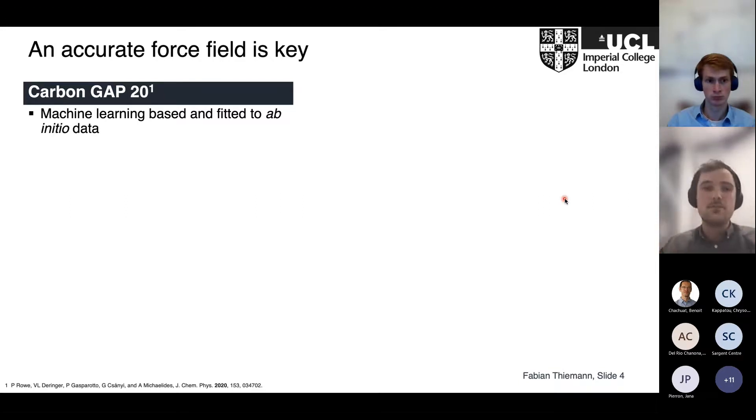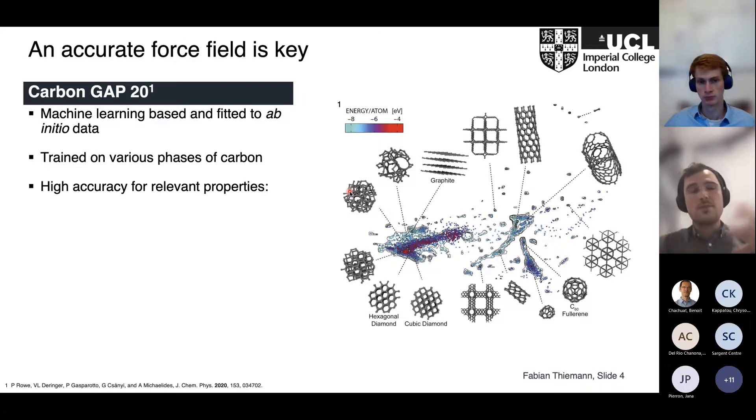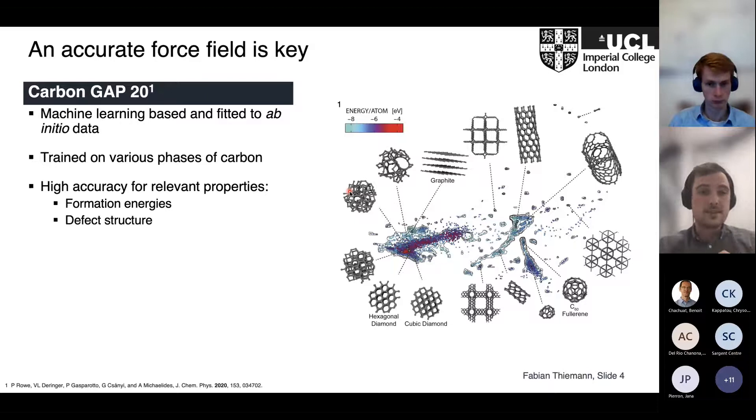It's basically fitted to a huge database of ab initio data, so quantum mechanical reference calculations. This potential really covers an entire phase space almost of carbon. Here's an overview of a few of these structures included in the training set, ranging from graphite, nanotubes, fullerenes, amorphous carbon, to defective graphene, pristine graphene, and so on. The high accuracy of the reference as well as this large training set ensure that we get very high accuracy for relevant properties, which includes the formation energies of defects, the defect structure itself, and phonons, which are the vibrations we're interested in when studying ripples.